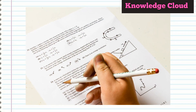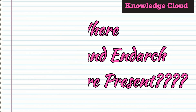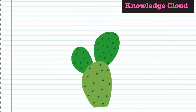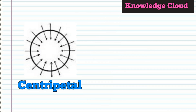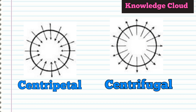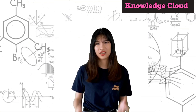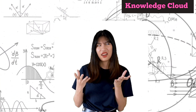There is a famous question in this chapter which comes in most exams. It is about whether the exarch condition or the endarch condition is present — whether it is present in the root or the stem, and whether it is in the centripetal arrangement or centrifugal arrangement. When these questions come, they can create a lot of confusion if we don't revise this chapter properly.